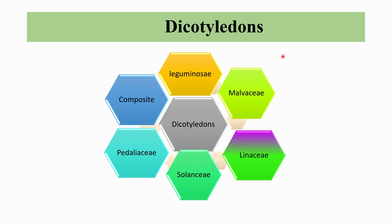Under Dicotyledons, the families include Leguminaceae, Malvaceae, Liniaceae, Solanaceae, Pedaliaceae, and Compositae. In Leguminaceae, crops include field bean, lupine, chickpea, lentil, fenugreek, alfalfa, soybean, peanut, grass pea, castor bean, red clover, and white clover. Malvaceae includes cotton, Liniaceae includes flax, and Solanaceae includes potato, tomato, and tobacco. Pedaliaceae includes sesame.